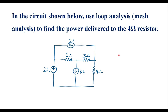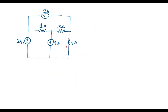In this video, let me consider one numerical on loop analysis. In the circuit shown below, use loop analysis to find the power delivered to the 4 ohm resistor. So this is the given circuit, and in this circuit we are supposed to calculate the power delivered to the 4 ohm resistor.